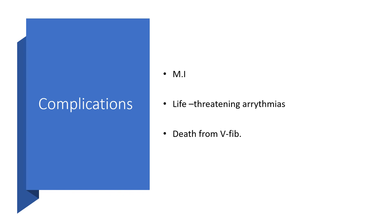What are the possible complications? Myocardial infarction. Life-threatening arrhythmias, and death from a particular arrhythmia — ventricular fibrillation. Remember, aside from hypomagnesemia, we can end up with ventricular fibrillation via torsades de pointes leading to ventricular tachycardia, going to polymorphic ventricular tachycardia, and then ventricular fibrillation.